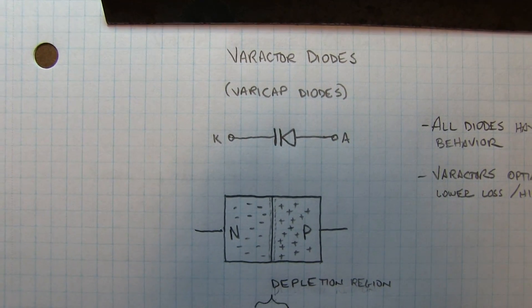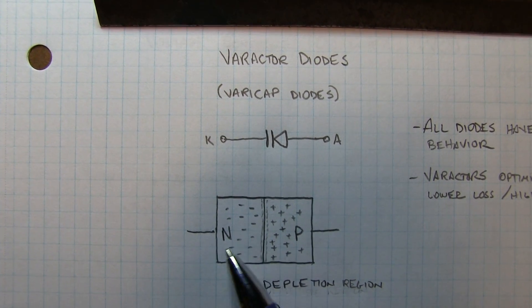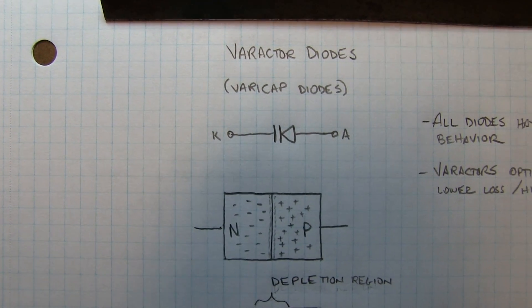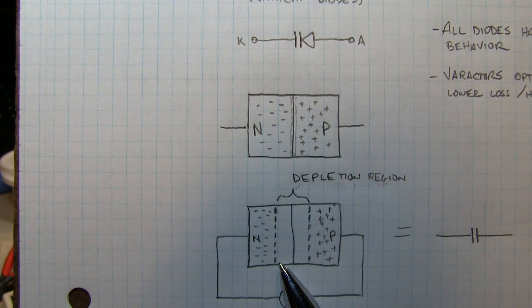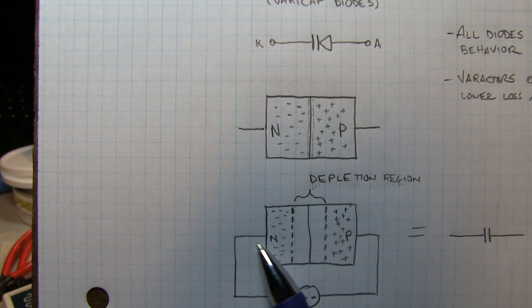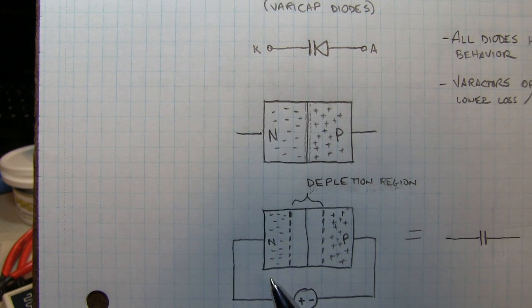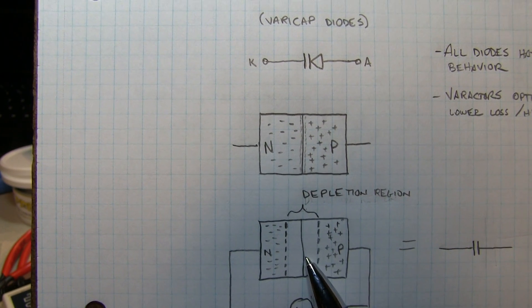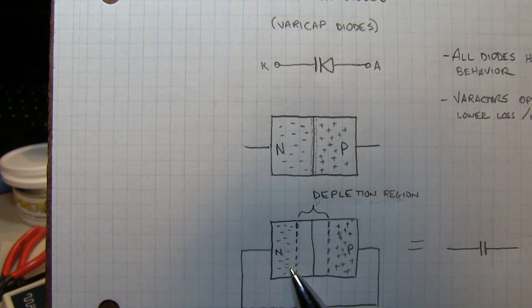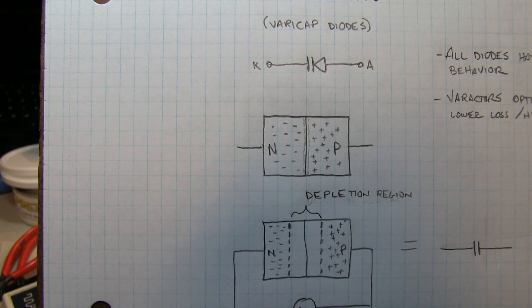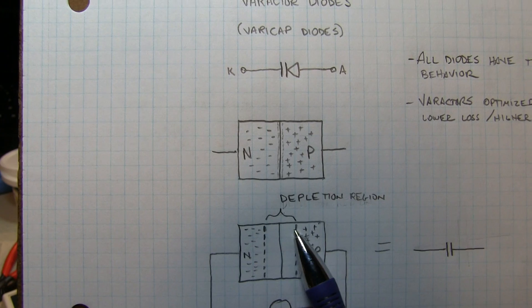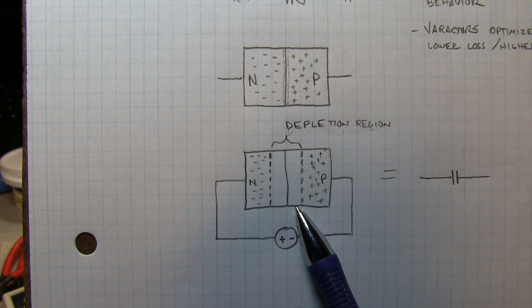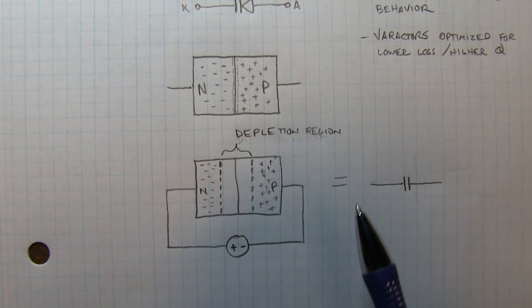They're typically used in reverse bias, because if you look at the structure of a diode, it's just P and N type material. The P material has excess holes or positive carriers, and the N type has excess electrons. When you apply a reverse bias, applying a positive bias to the N attracts the N charges to one end, and the negative attracts the P charges. That leaves a region within the junction that has no carriers at all - kind of like an insulator. So we've got two charged areas separated by an insulator, which is essentially a capacitor. The width of that depletion region is a function of the reverse voltage applied. The more voltage you apply, the wider the depletion region and the lower the capacitance. It's really as simple as that.